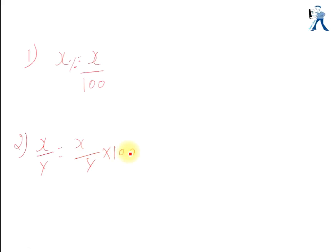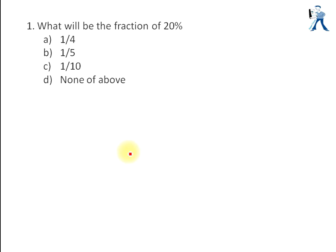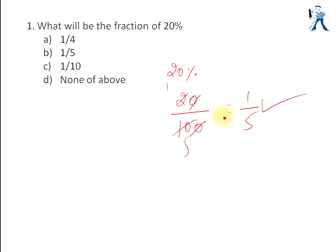In the first example: what will be the fraction of 20%? Since 20% means 20 divided by 100, we simplify this to get 1/5. The answer is option B. It is a very simple concept, but we do make mistakes in these simple steps while solving problems in examinations.